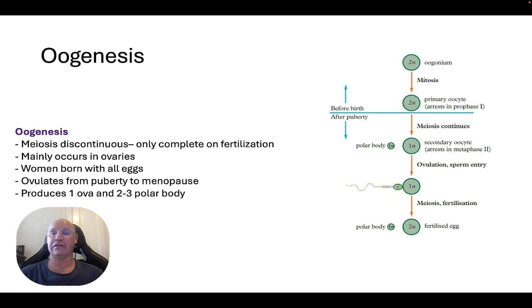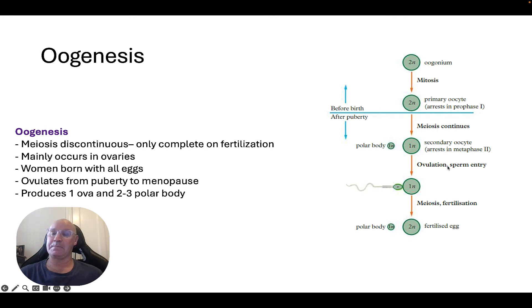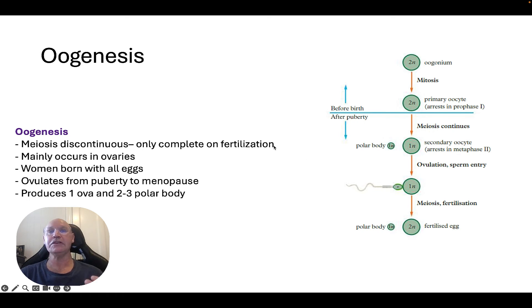Oogenesis is a discontinuous process. All of the eggs that a female is ever going to have are present in their ovaries at birth. But meiosis has only just started — it actually stops at birth and doesn't continue again until puberty. After puberty, we progress a little further through the meiosis process, and then further development occurs at ovulation. But we don't finalise the meiosis process until the egg is fertilised by the sperm. So it's a discontinuous process, only completed on fertilisation.